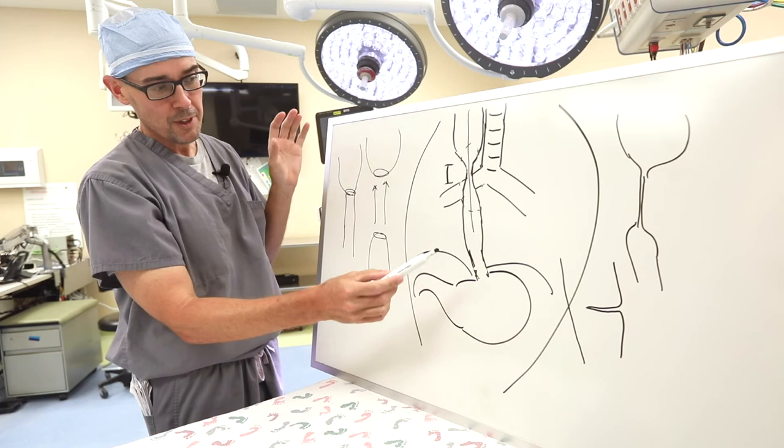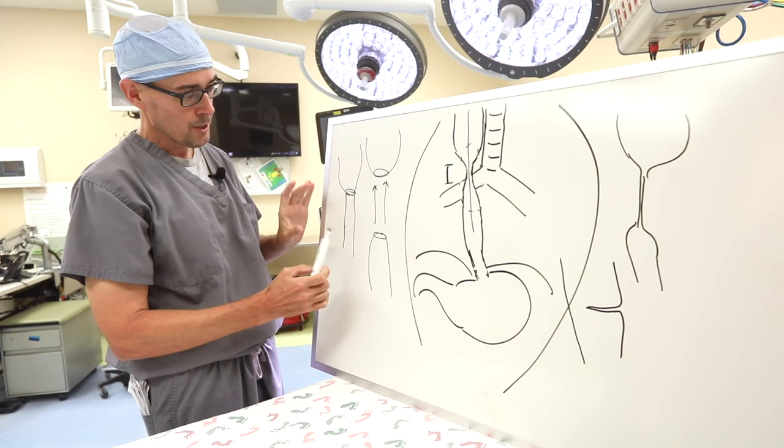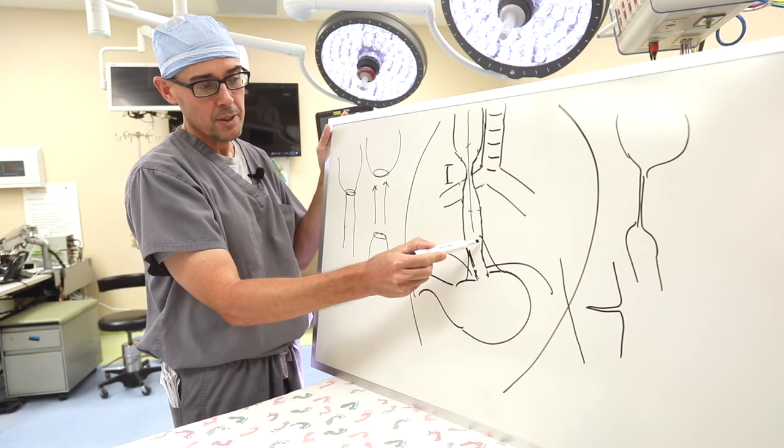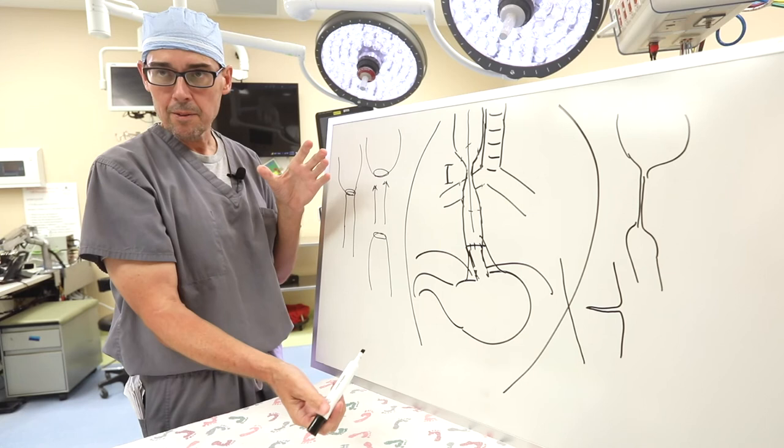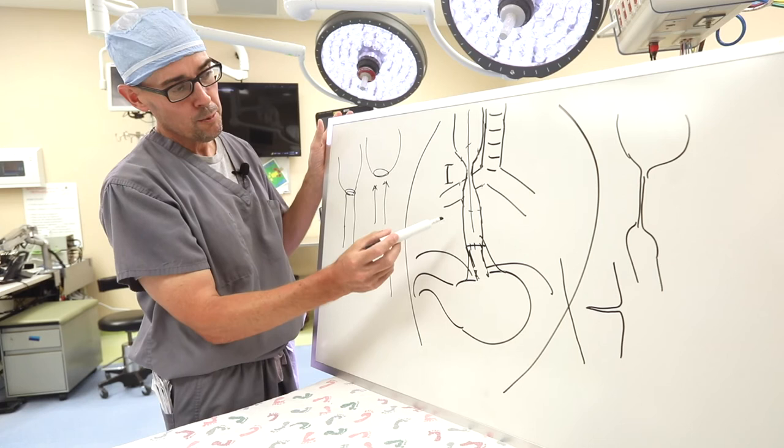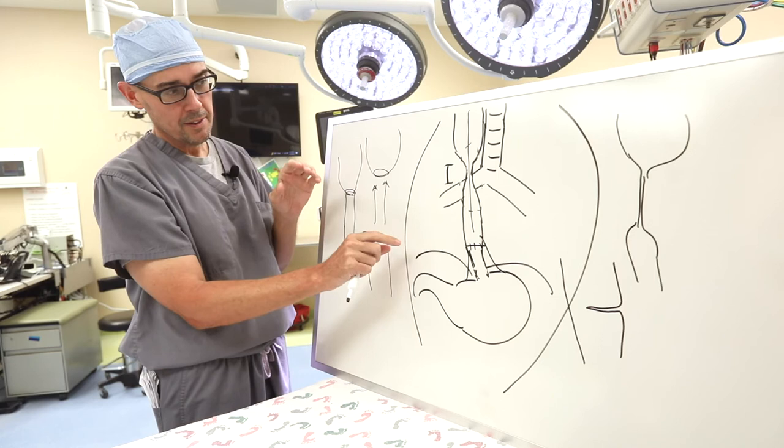The other issues we'll see with strictures is where is the stomach? Sometimes with esophageal atresia, in order to bring the esophagus together, we see cases where the stomach is actually pulled up into the chest. These kids often have worse reflux disease that also impacts the stricture.